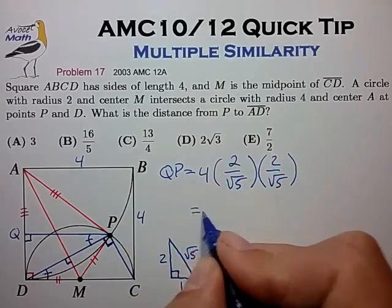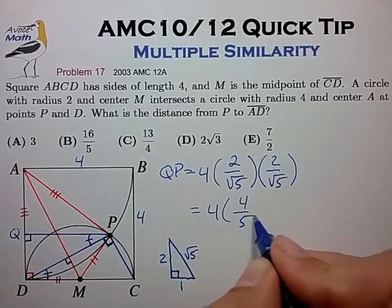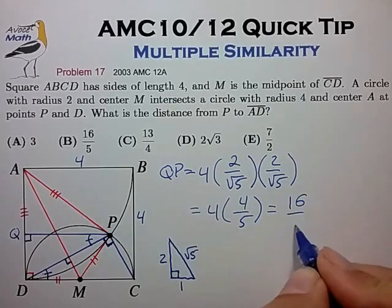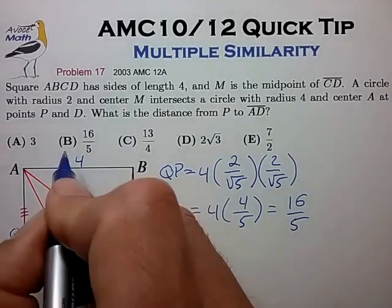So working out this math, we have 4 times 4 over 5. And that's 16 over 5. And that's choice B.